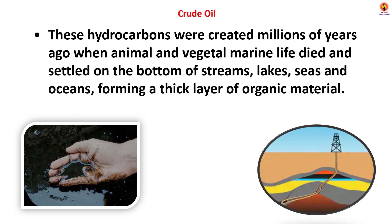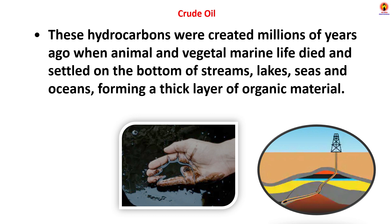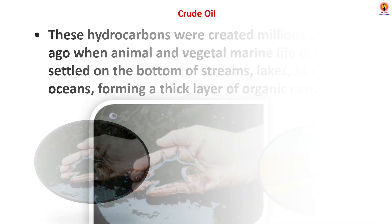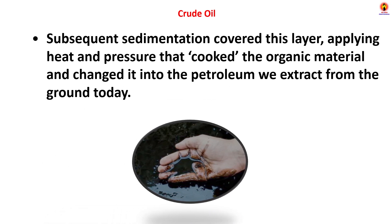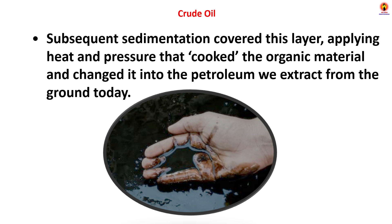These hydrocarbons were created millions of years ago when animal and marine life died and settled on the bottom of streams, lakes, seas and oceans, forming a thick layer of organic material. Subsequent sedimentation covered this layer, applying heat and pressure that cooked the organic material and changed it into the petroleum we extract from the ground today.